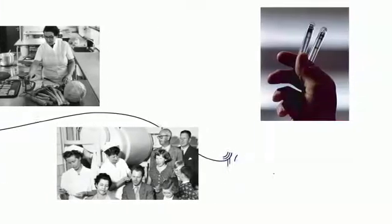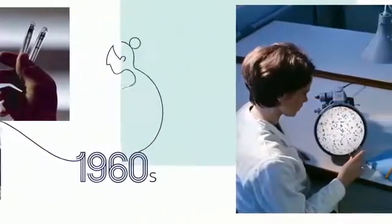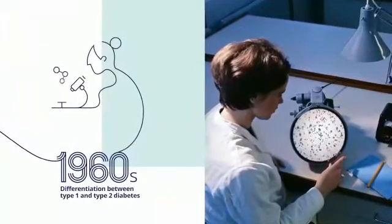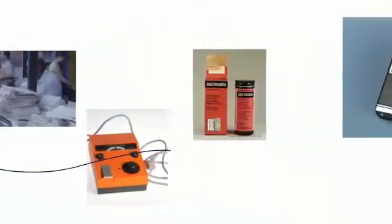Type 2 diabetes is the most prevalent form. The incidence was growing and the race was on to develop new treatments and approaches to care. New technologies like the portable glucose meter eventually made it easier for people to monitor their condition.